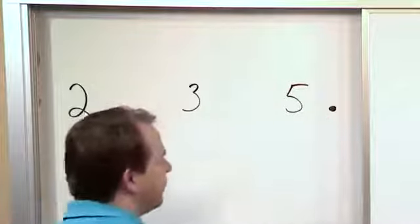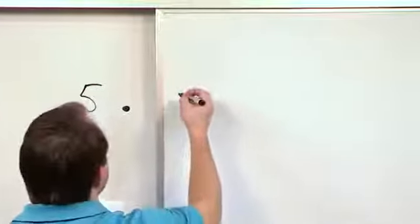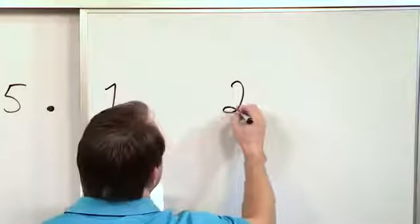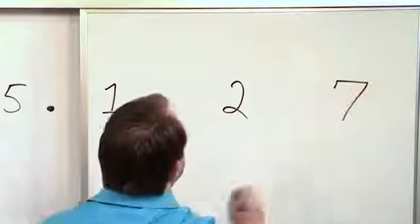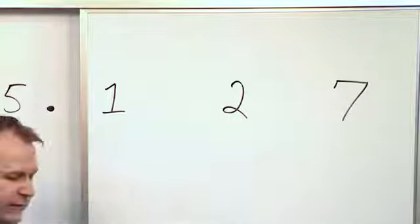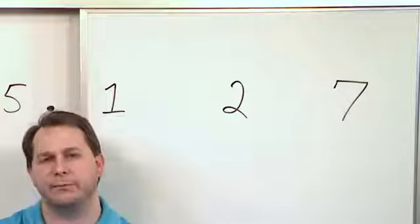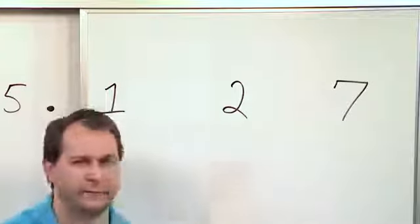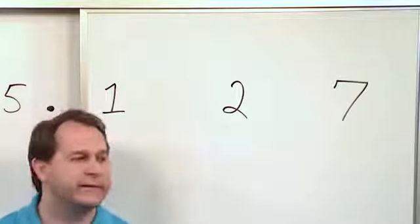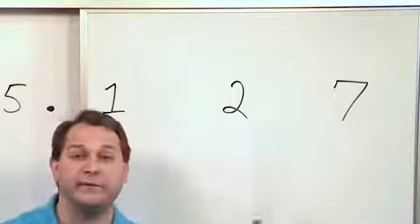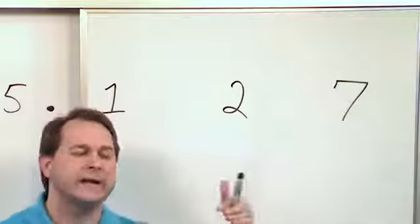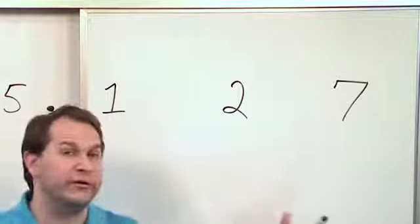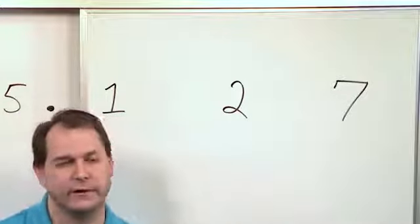Now after the decimal place is what we're going to focus a lot on here. Let's say I have some digits here — one, two, and seven. So I have three digits before and three digits after. The main thing you need to know about decimal place value is: the farther and farther away you get from the decimal on the right-hand side, the less important those values are, the less that they're worth.